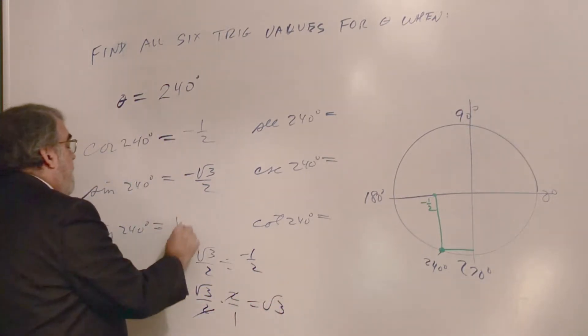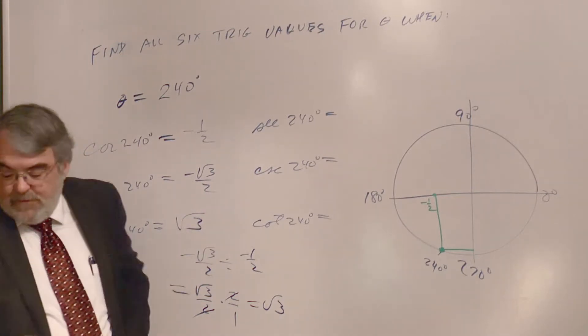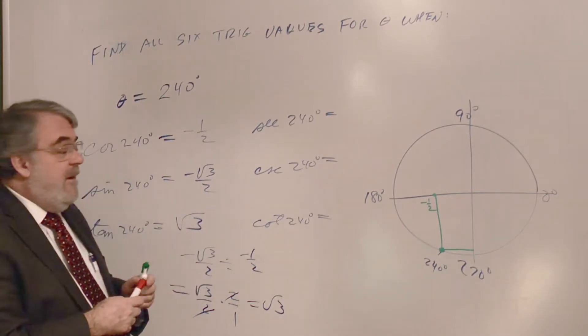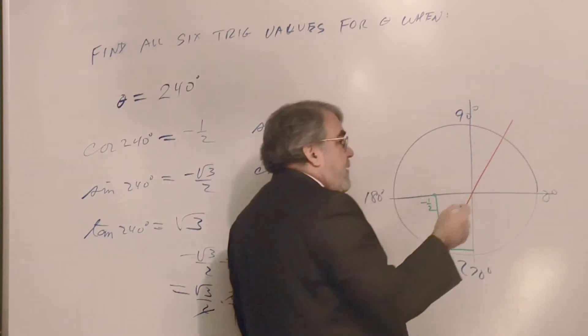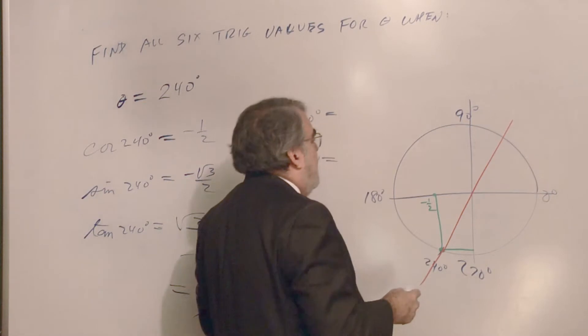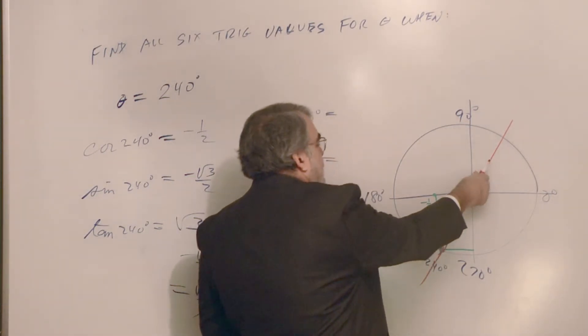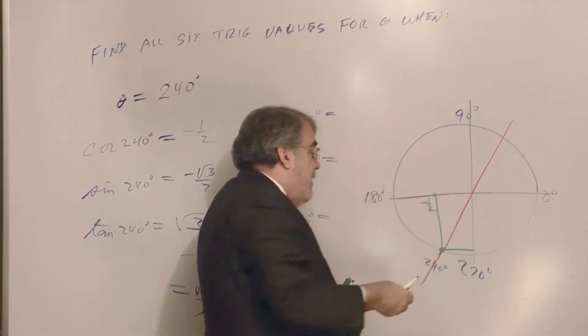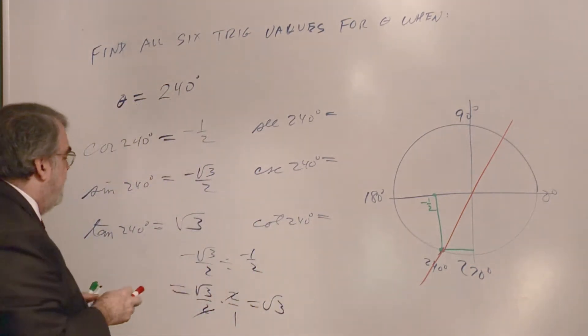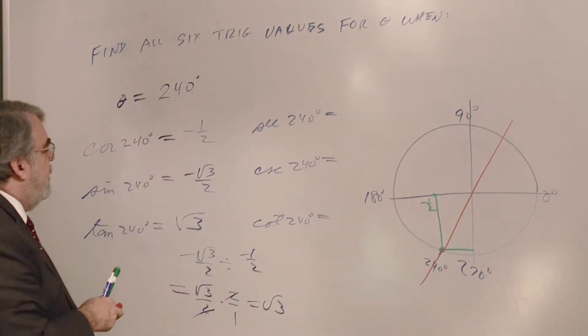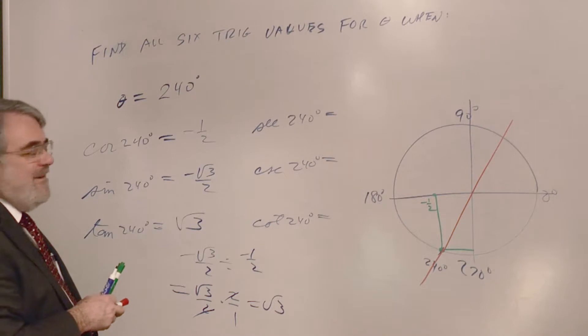But if you learn to read tangent as a slope when it comes to the friendly angles, the known values, of course, then the slope is greater than 1 and it's positive. So tangent has to be positive down here. Tangent 240 is the square root of 3.